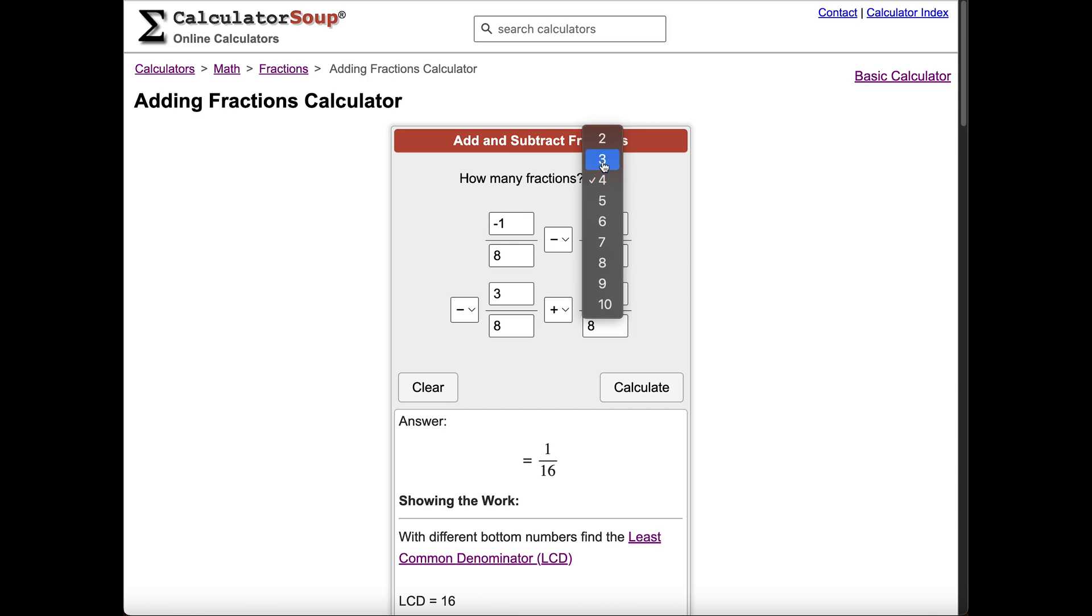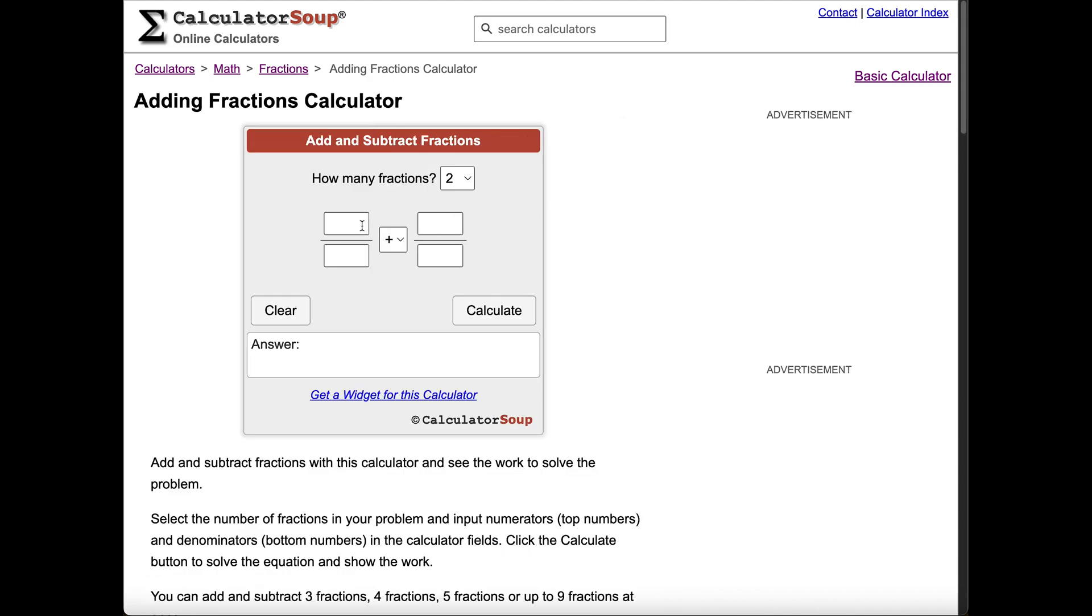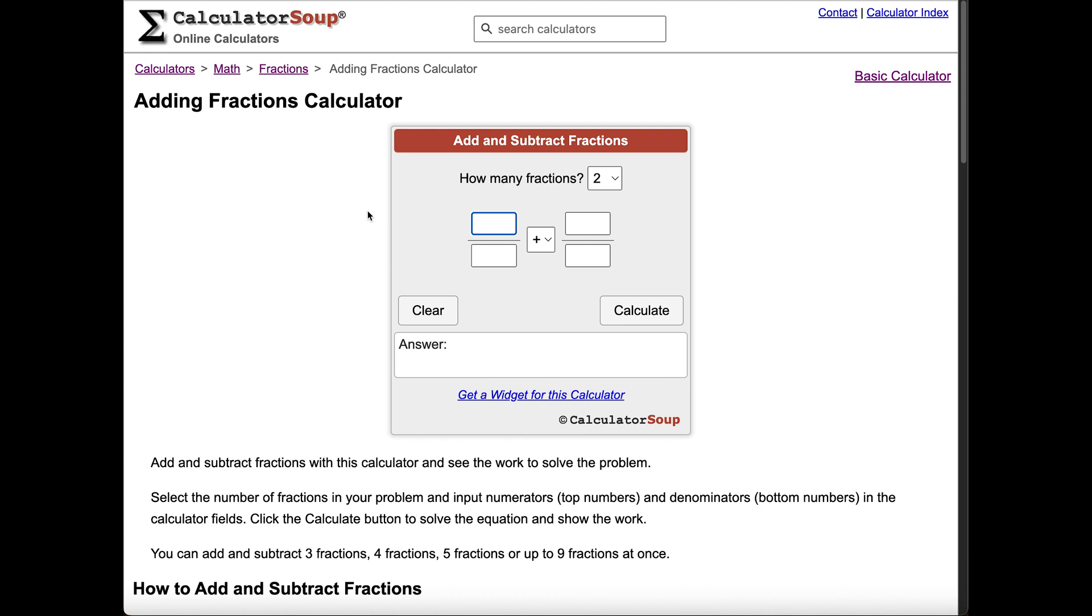Choose from the drop down above to change the number of fractions you want to subtract. Let's do one more example: 11 tenths minus 1 half. Press the calculate button to view the steps to get the answer below.